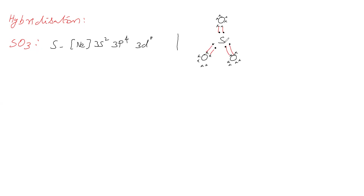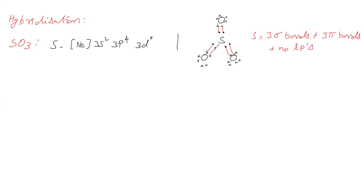In SO₃, the central atom sulfur has 3 sigma bonds and 3 pi bonds, with no lone pairs on the central atom. Each double bond consists of 1 sigma and 1 pi bond, so there are 3 sigma bonds and 3 pi bonds total.